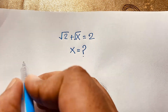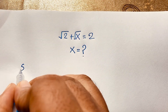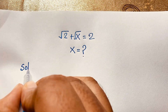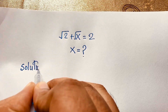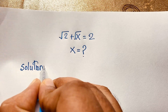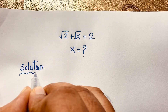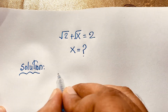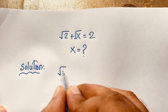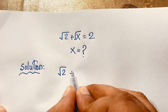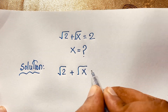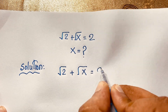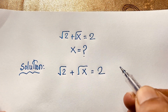So our math solution — our question is: square root 2 plus square root x is equal to 2. This is our question.